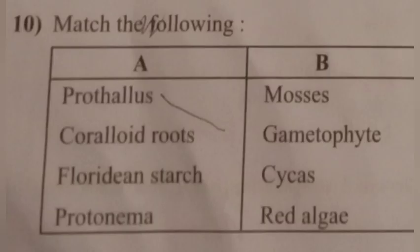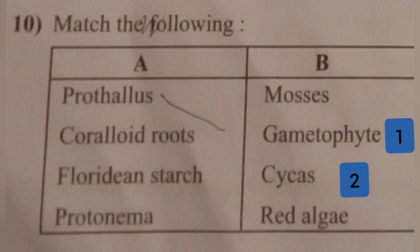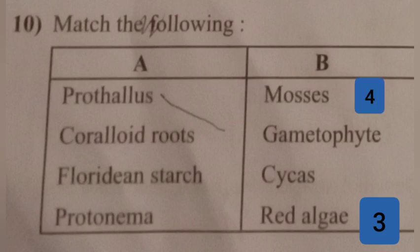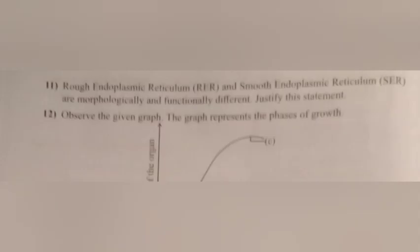Question 10. Match the following. Answer: Prothallus — Gametophyte; Coralloid roots — Cycas; Floridian starch — Red algae; Protonema — Mosses.